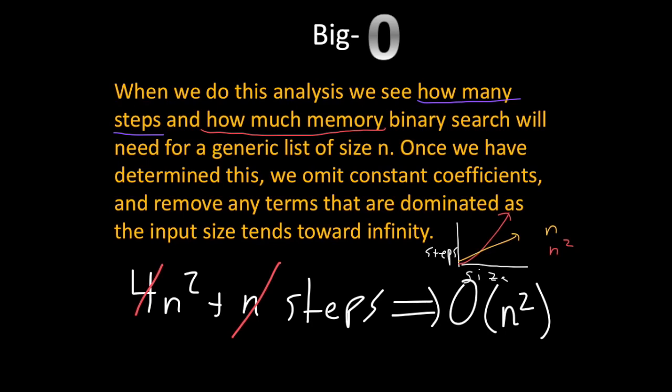And typically in a mathematical analysis, an asymptotic analysis, we're not really concerned with constant coefficients and dominated terms as n grows larger and larger because they become increasingly insignificant. So that's why we follow this procedure.